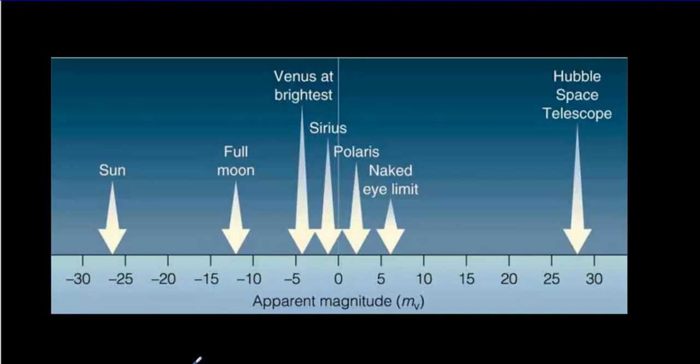This original apparent magnitude scale is defined just in terms of rough human estimates. But of course, as science advances, we get more ways to measure brightness. We still base what we call the apparent magnitude on that original scale. So the naked eye limit, the faintest star that we could see, is still a six.